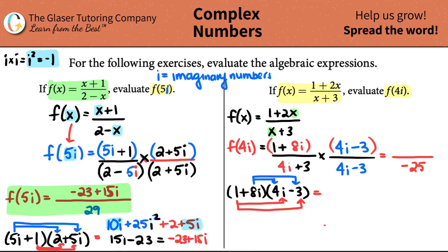So 1 times 4i is just 4i. 1 times a negative 3 is just a negative 3. Now we move to the second term. 8i times 4i. 8 times 4 is 32. i times i is i squared. 8i times a negative 3 is a negative 24i. Let's clean this up. I see that I have a 4i here and a negative 24i here. So this would turn into a negative 20i.